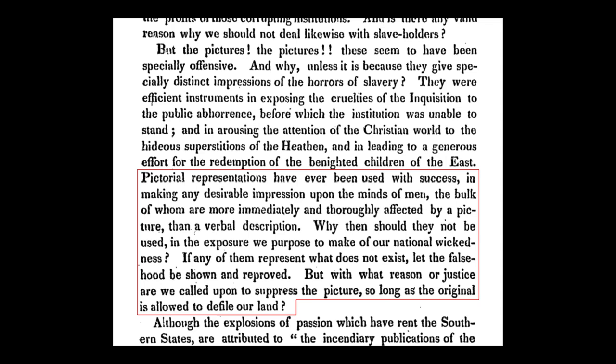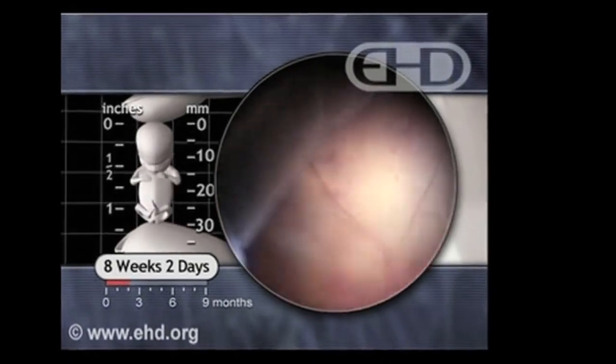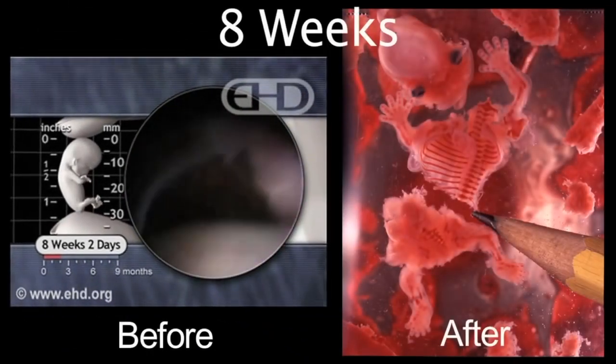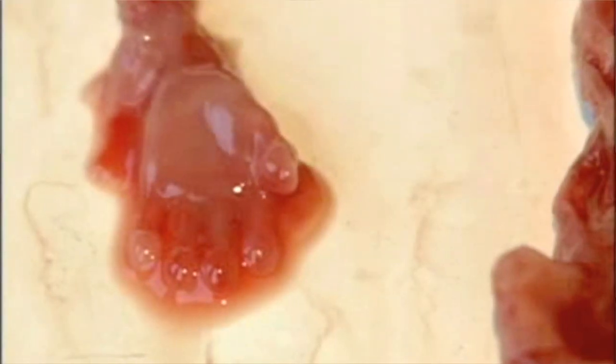'Why then should they not be used in the exposure proposed to make of our national wickedness? If any of them represent what does not exist, let the falsehood be shown and reproved. But with what reason or justice are we called upon to suppress the picture, so long as the original is allowed to defile our land?' To translate this into modern day language: why are people so upset about these graphic images — more than they are upset about the actual thing that it depicts? If these images are false in any way, let that be shown and brought to light. However, if they are real, then what follows is that we should be more upset about the fact that it is real.